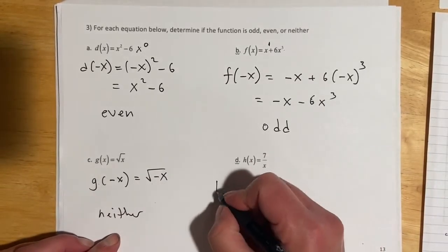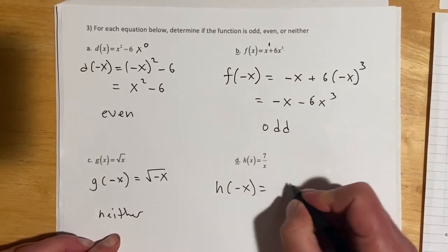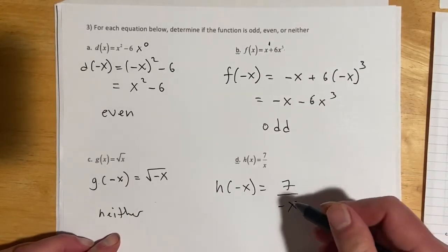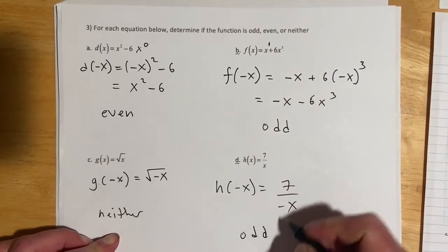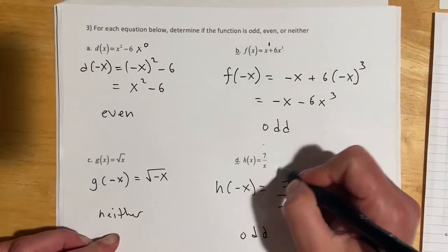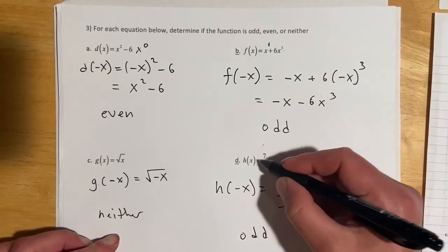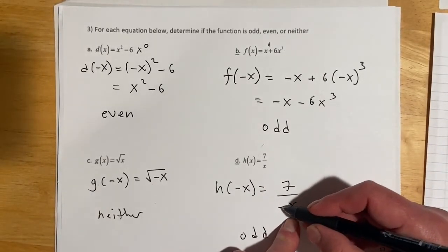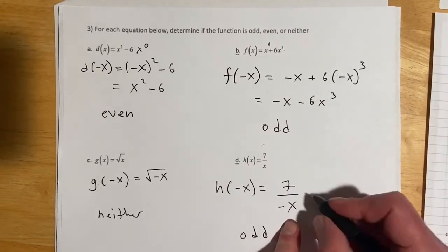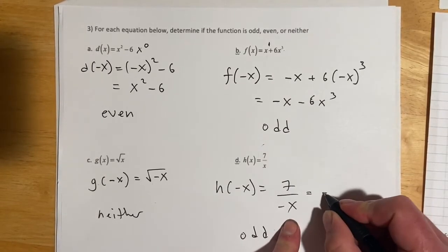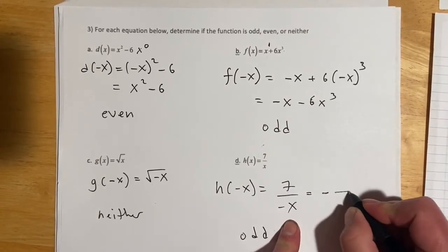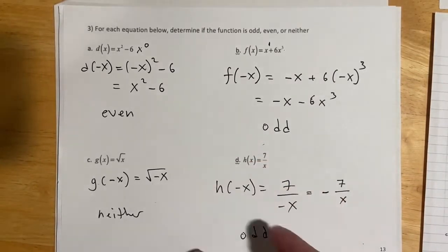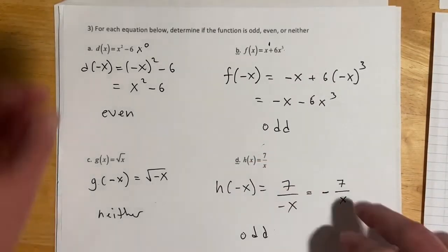The square root example is neither, because putting in 1 gives the square root of 1, which is 1, but putting in negative 1 gives an imaginary number — it doesn't exist. For H of negative X: that's 7 over negative X, which is just the negative of 7 over X. Don't let the negative in the denominator fool you — that's exactly the original multiplied by negative 1, so it's odd.